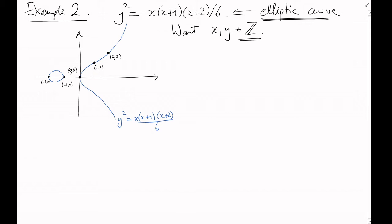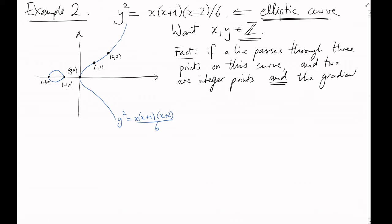Okay, well, we can try drawing a few more lines. They'll have rational slope and they'll give us rational solutions. For example, this line gives us this solution. This line gives us this solution. But these aren't integers. How do we find integer solutions? It's not too hard to see that on a curve like this, if a line passes through three points, and two of them are integer points, and the gradient of that line is an integer, then the third point is an integer point as well.